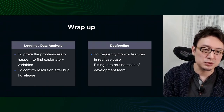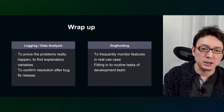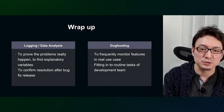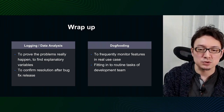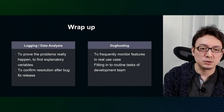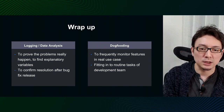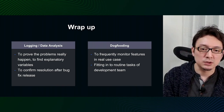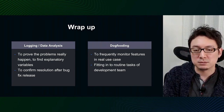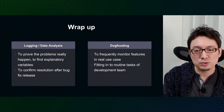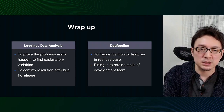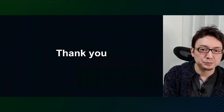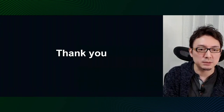Lastly, our team uses logging and analysis to prove that a problem is occurring, to investigate the factors that may be causing the problem, and to verify that the problem has been resolved after the release of the fix. For dogfooding, we usually monitor functions in actual use cases to make sure there are no problems. I think it is important to integrate it into the daily work of the development team. Thank you very much for your attention.